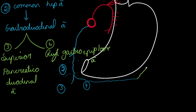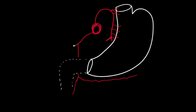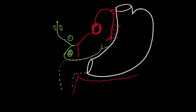The right gastro-epiploic artery anastomoses with the left gastro-epiploic artery, which we will discuss later. The common hepatic artery also divides into the proper hepatic artery and the right gastric artery. The right gastric artery goes along the lesser curvature of the stomach and anastomoses with the left gastric artery. The proper hepatic artery moves upward with the bile duct and portal vein, divides into right and left hepatic arteries, and gives off the cystic artery to supply the gallbladder.